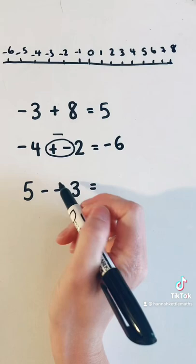And again, we've got two symbols together here, and two minuses together make a plus. 5 + 3, start at 5, go 3 to the right, and that's 8.